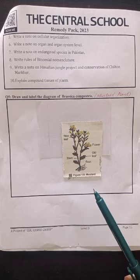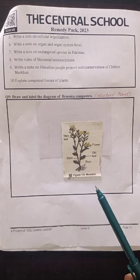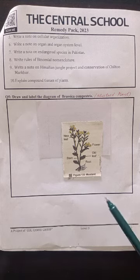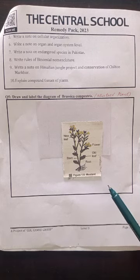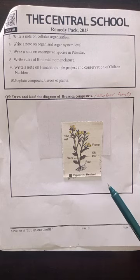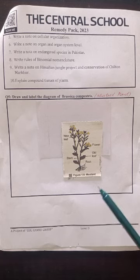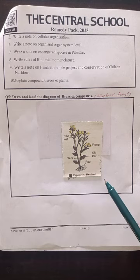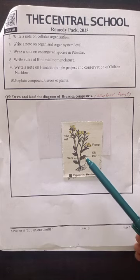The brassica plant has two types of organs: the reproductive organs and vegetative organs. The reproductive organs are the flowers that take part in sexual reproduction, making seeds and fruits. The vegetative parts are roots, stem, leaves, and branches. On page number 13 you will see this diagram.